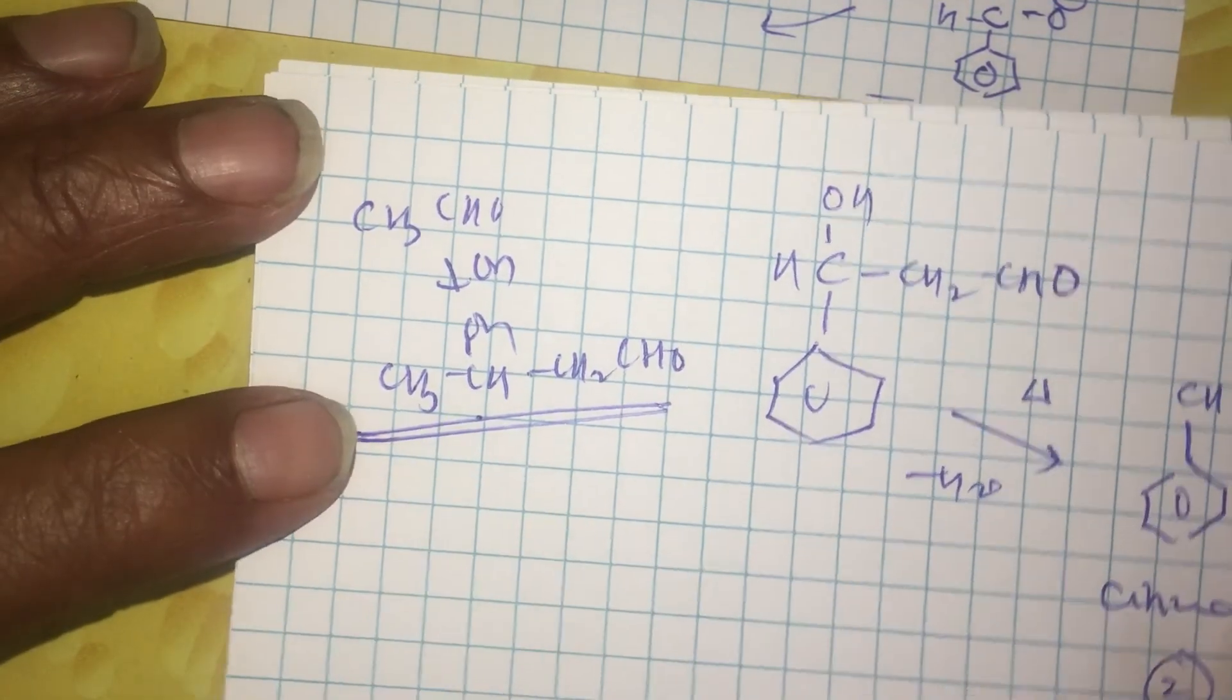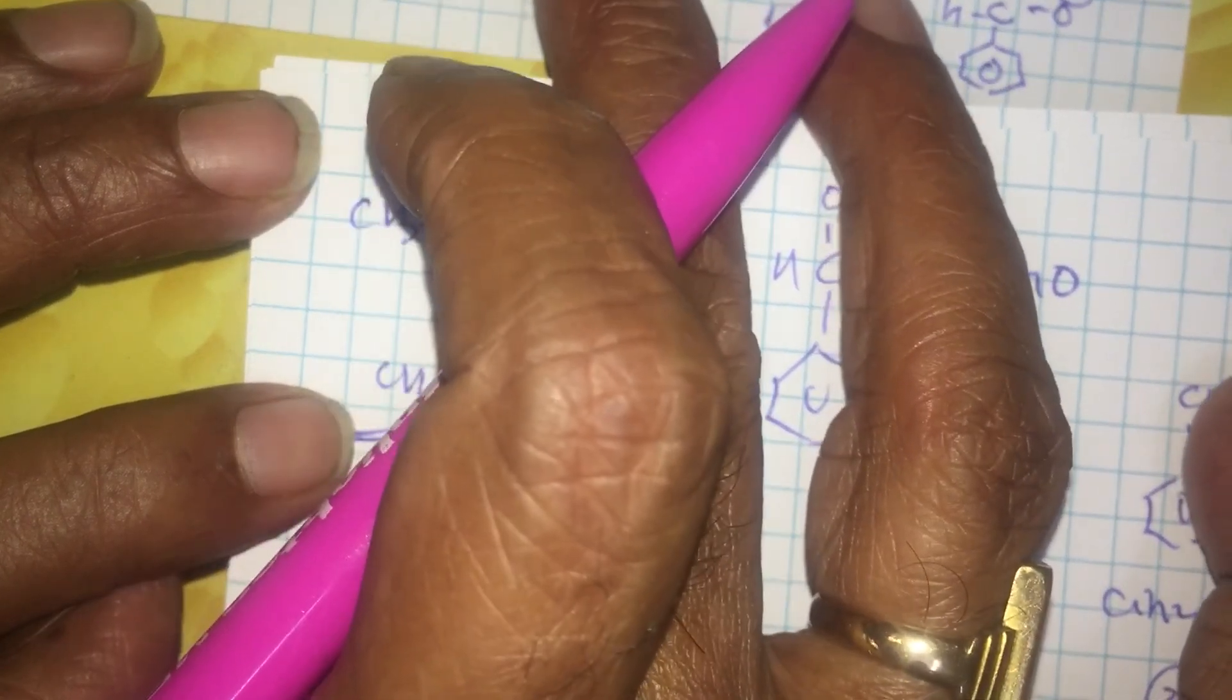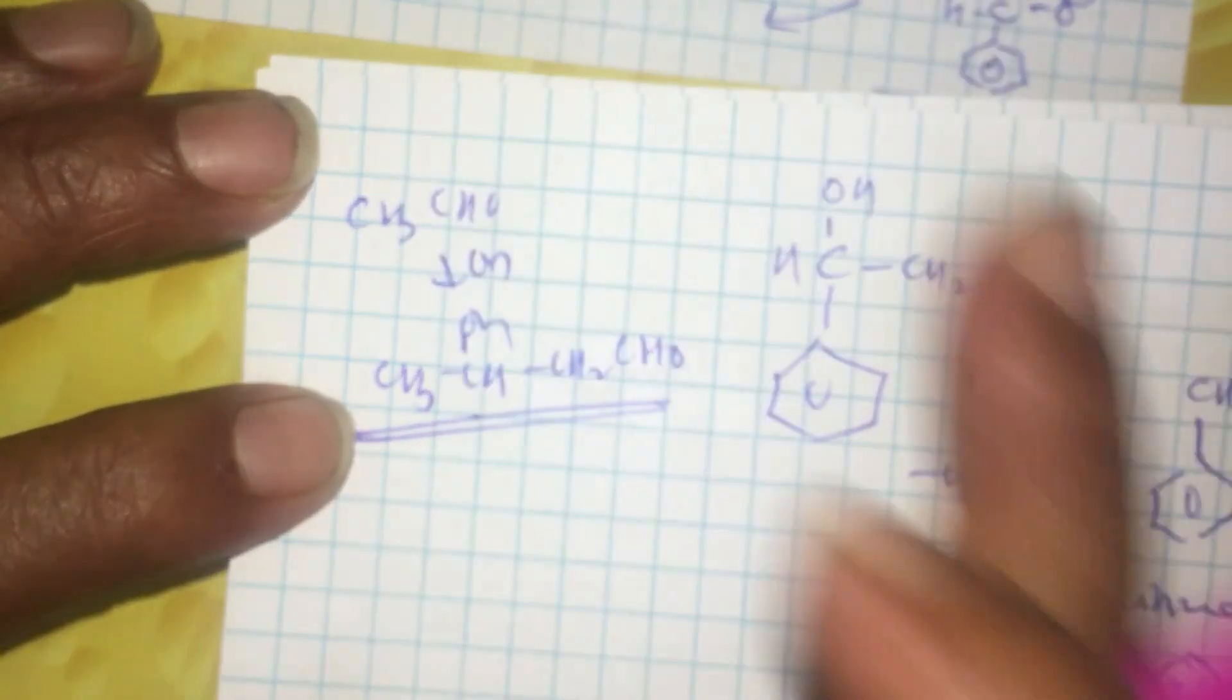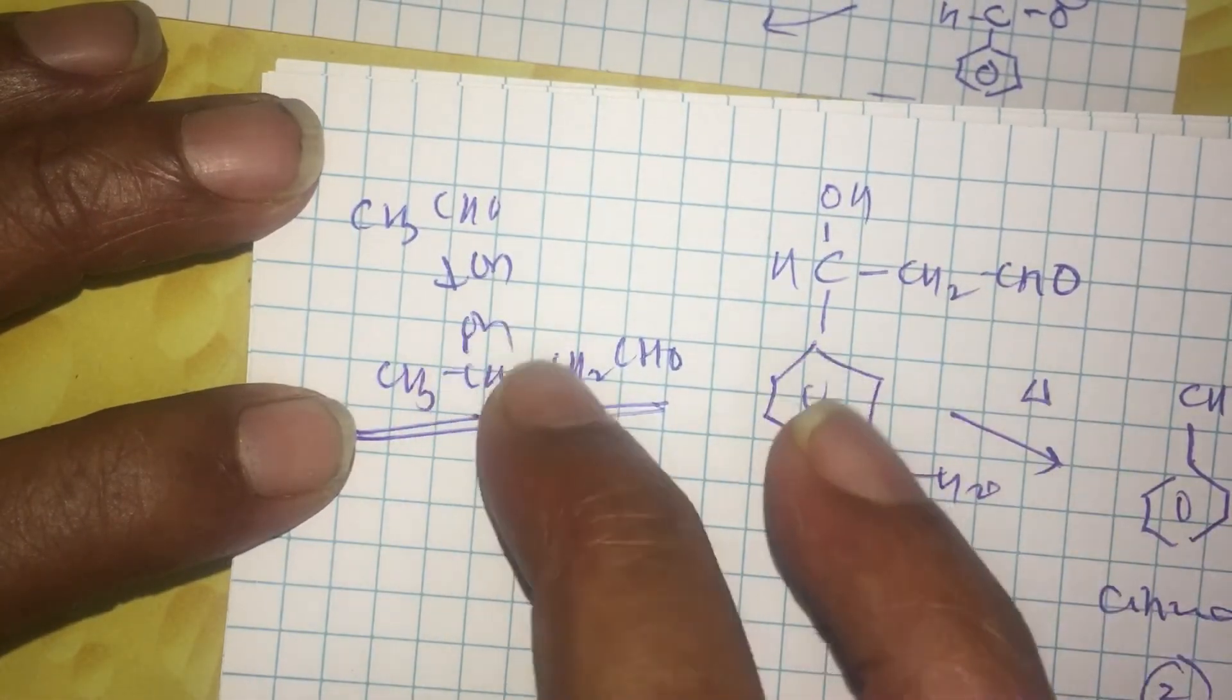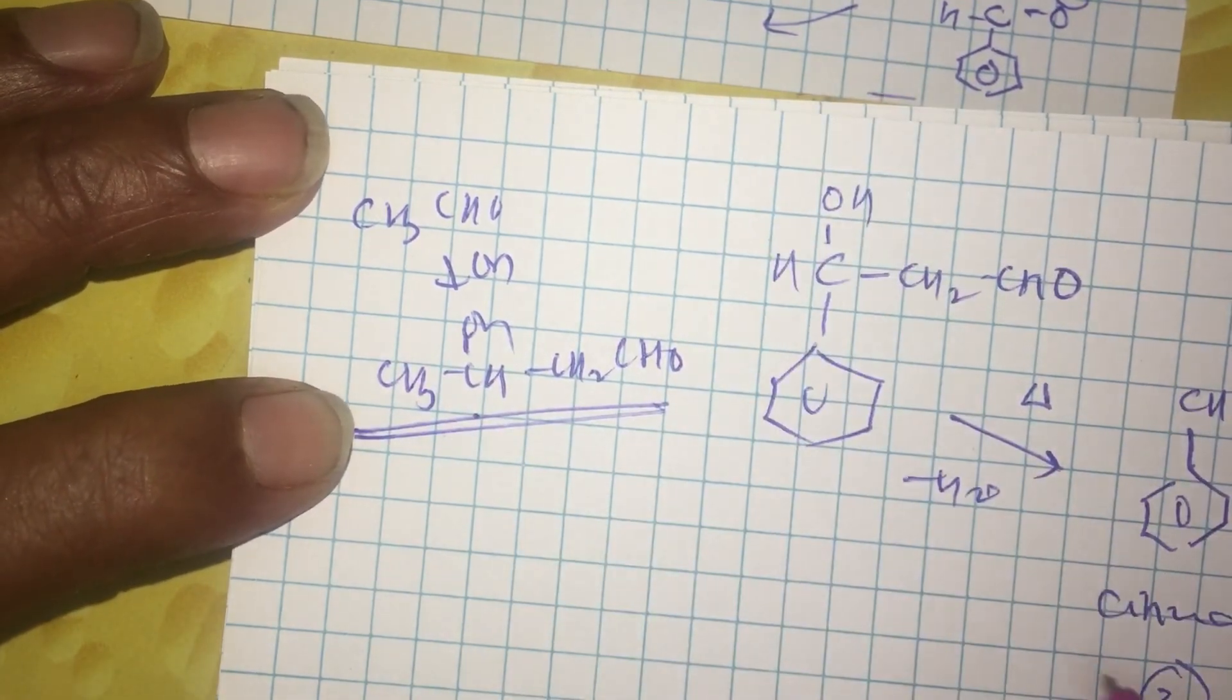If you don't want two products, if you want only one product, well, take acetaldehyde, add a little bit of LDA, that is lithium diisopropyl amide. You are making enolate, preventing the dimerization. The reaction proceeds to give only one product.